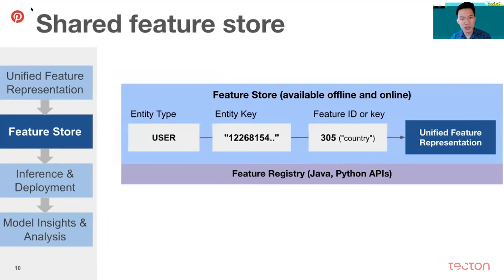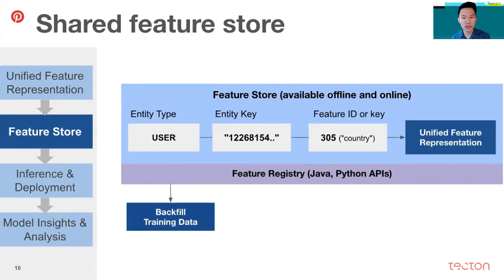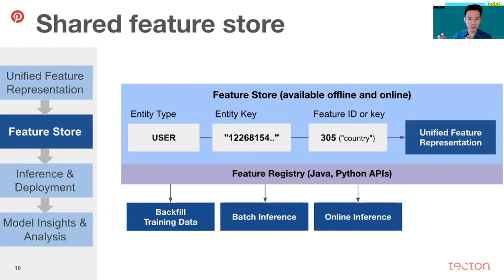Once we had the feature representation, the next logical step was a shared feature store. We organized the features as a layered key-value store where we can get features using an entity type, a key, and feature IDs — for example, a user with a given ID, and then retrieve a feature like the country of that user. This standardized store is a foundation for many downstream tools. One of the most valuable was being able to backfill previously collected training data. Previously, ML engineers commonly logged new features for several weeks in production to gather new training datasets. But a standard feature format and shared store means they can start doing modeling experiments entirely offline and save weeks per iteration. The feature store also enables standardized inference, since the framework can now fetch standard features and pass them into the models. And we built a feature catalog called FeatureHub.